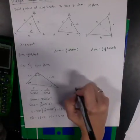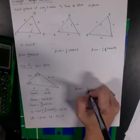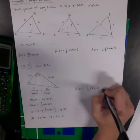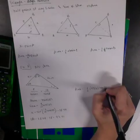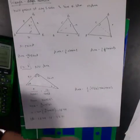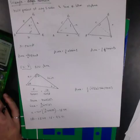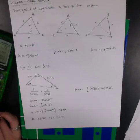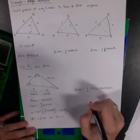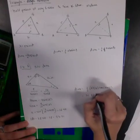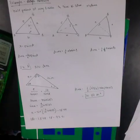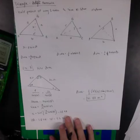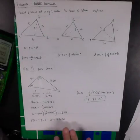So my area is one half times 9 times 16 times sine of 93.51 degrees. I can do it all in my calculator as one step, and it gives me an area of 71.87 square inches. We're using all the things now — law of sines and the new area formula.